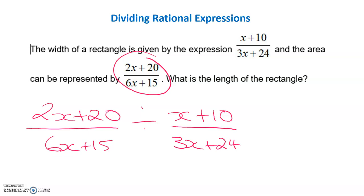Now since this is a rational expression, or a fraction, we know that we can't divide. Instead, we need to change this into a multiplication and turn this into its reciprocal, which basically means to turn it upside down, so that we'll be multiplying by 3x plus 24 over x plus 10.